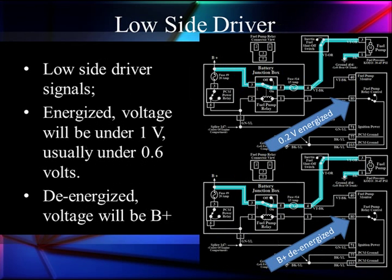Let's talk about how we test these. We'll start with our low side system. When a low side driver is energized, it will be under one volt — almost always under 0.6 V, and in some cases down as low as 0.2 V when energized. That tells us we're supplying a ground to an injector, and most of the voltage available is dropped by the fuel pump relay coil.